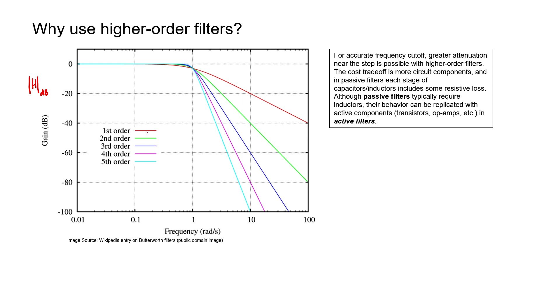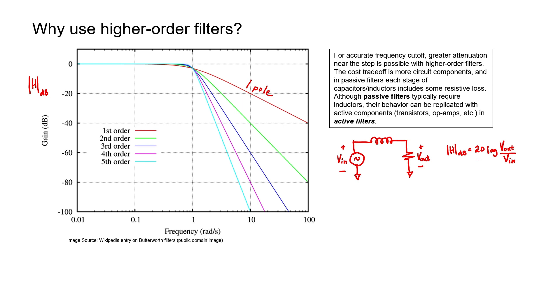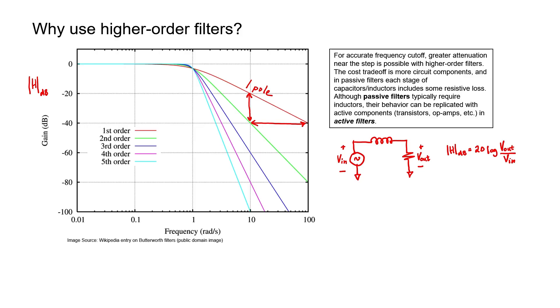A first-order low-pass filter corresponds to a one-pole filter. This circuit, for example, could implement such a one-pole filter — this would be the input, this the output, and this the transfer function in decibels. Because of the base-10 logarithm with a factor of 20 in front, we get 20 decibels per decade roll-off. For every one decade, we fall 20 decibels. That's the nature of a one-pole filter — all one-pole filters fall off at 20 decibels per decade.